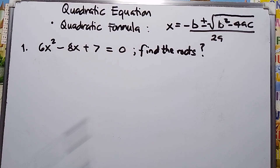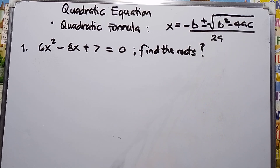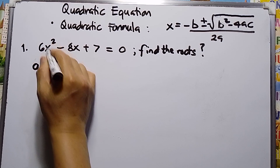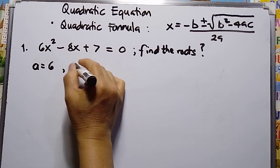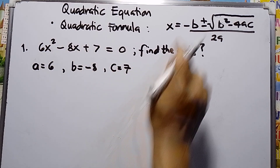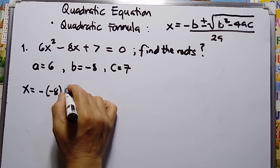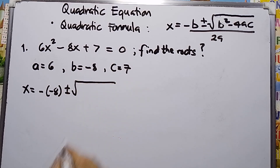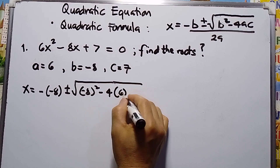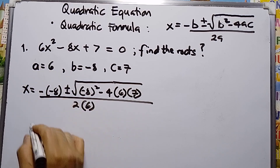The quadratic formula is x equals negative b plus or minus square root of b squared minus 4ac, all over 2a. We collect the coefficients: for x squared, a equals 6; b is negative 8; and the constant c is positive 7. Using the formula, x equals negative of negative 8, plus or minus square root of b squared — that is negative 8 squared — minus 4 times a times c, all over 2 times a which is 6.